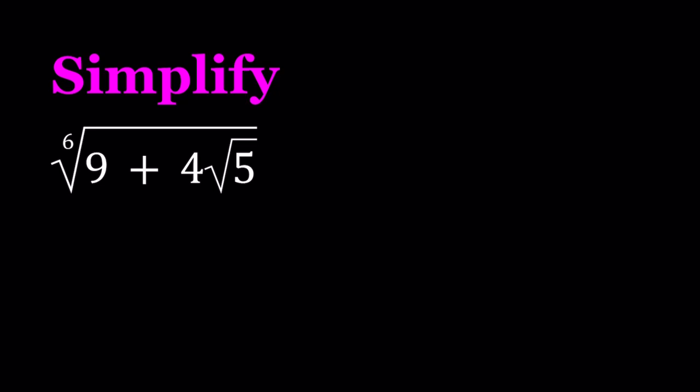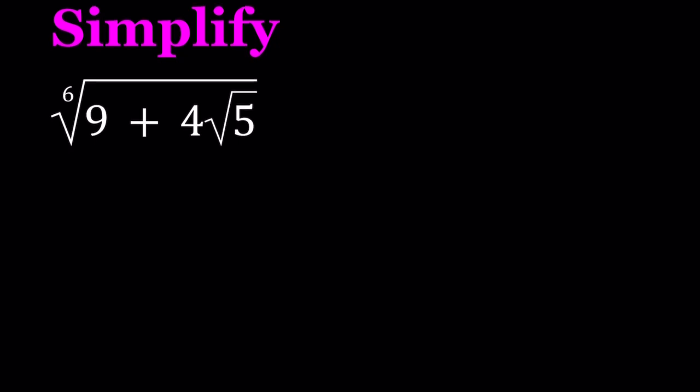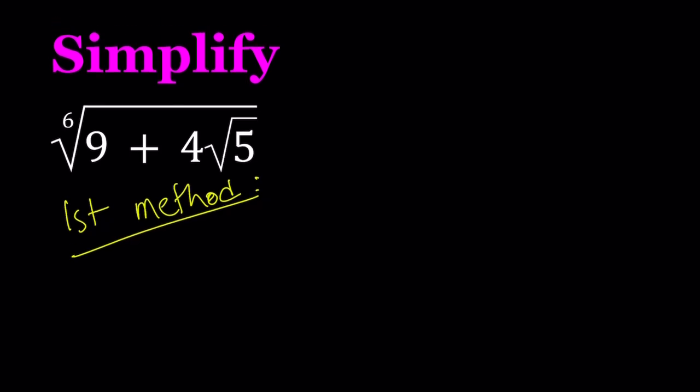I'll be presenting two methods, but in the second method I'll also talk about some alternative paths. So my first method basically involves using the binomial theorem. If we have a nice solution for this expression, then the sixth root of 9 plus 4 root 5, we should be able to write it as a plus b root 5, where a and b are rational numbers.